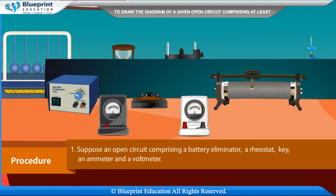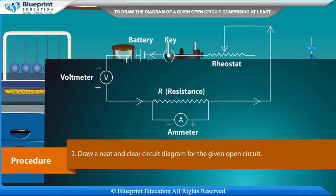Procedure: Suppose an open circuit comprising a battery eliminator, a rheostat, a key, an ammeter, and a voltmeter. Draw a neat and clear circuit diagram for the given open circuit.